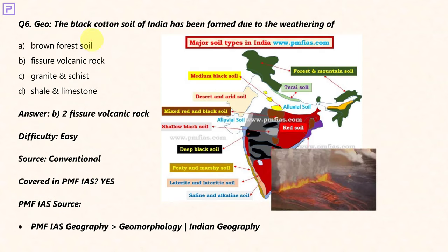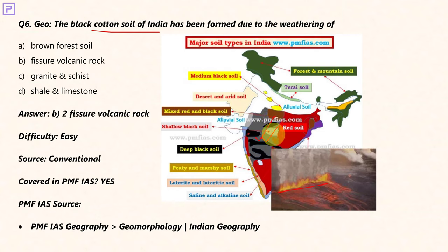The black cotton soil of India has been formed due to the weathering of — and this is another easy question. Black cotton soil is also known as Regur. It is the typical feature of the northwestern side of the peninsula where the Deccan Traps are. The Deccan Traps were formed due to flood basalt volcanism, also known as fissure volcanism, where a large fissure allows significant basaltic magma to flow out. These rocks are the reason behind the black cotton soil in the Deccan Traps region. A similar landform is the Siberian Traps. The answer is straightforward and covered in PMFIS Indian Geography notes.